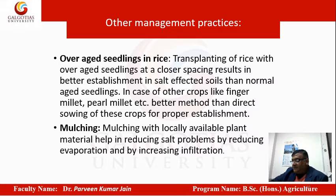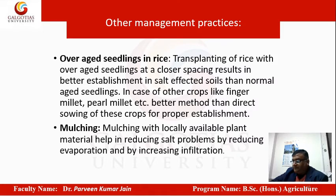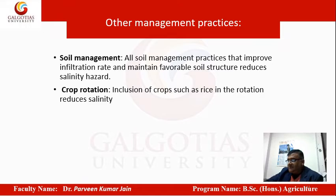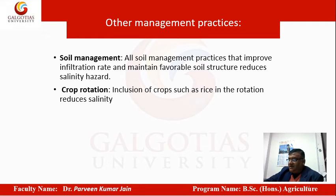Mulching — covering the soil surface with leaves or similar material — reduces evapotranspiration losses, so salts move downward rather than being brought up by water movement. Soil management by adding lime, gypsum, organic matter, or dry leaves also helps. Crop rotation, by changing the crops grown, helps in altering the salinity of soils over time.